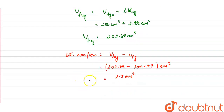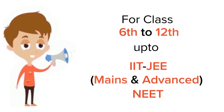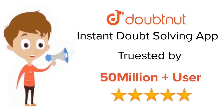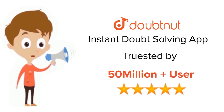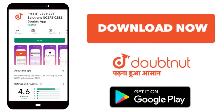So the volume overflow is 2.7 centimeter cube, and this is our final answer. For class 6 to 12, IIT JEE and NEET level, trusted by more than 5 crore students — download Doubtnut today.